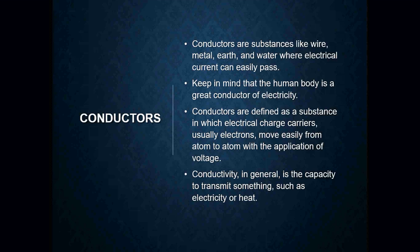Conductors are substances like wire, metal, earth, and water where electrical current can easily pass. Keep in mind that the human body is a great conductor of electricity — we're made of mostly water. So if electricity happens to flow through our body, we become a part of that electrical circuit and we get electrocuted or shocked. Conductors are defined as a substance in which electrical charge carriers, usually electrons, move easily from atom to atom with the application of voltage. Conductivity is the capacity to transmit something such as electricity or heat.